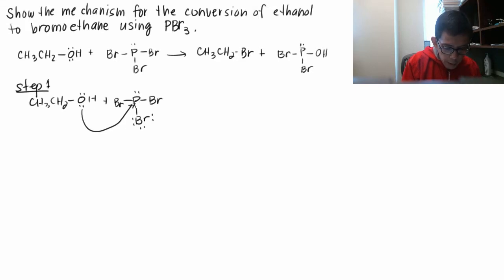And while it's attacking the phosphorous, what happens is that bond between the phosphorous and one of the bromines goes to the bromine as a fourth lone pair. And you get this CH3CH2OH, and now you have a covalent bond between the oxygen on the alcohol and the phosphorous on PBr3.